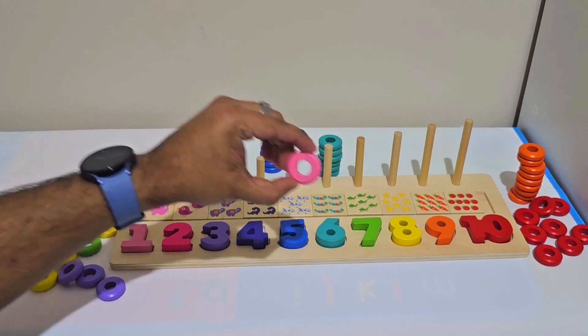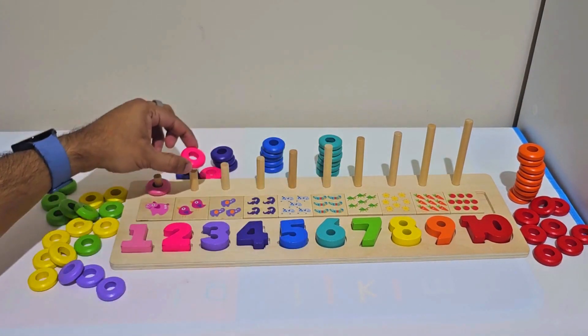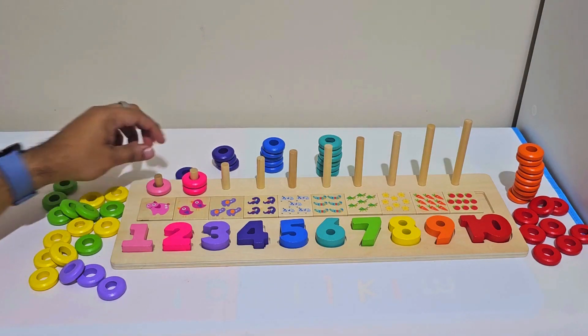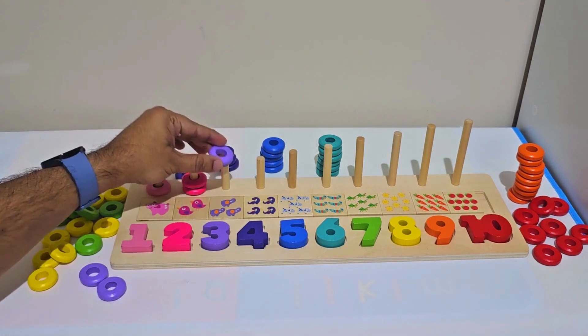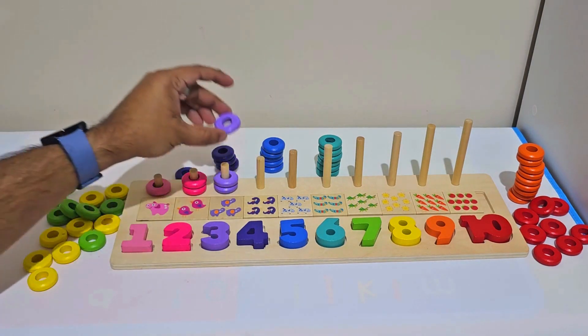Now let's go and count the number of rings. We have one light pink ring. We have one and two deep pink rings. We have one, two, three purple rings.